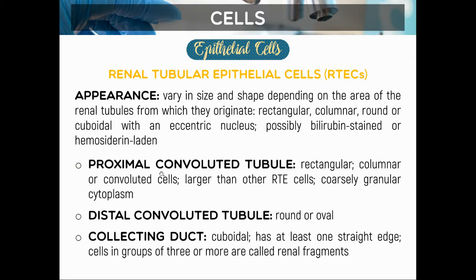For the proximal convoluted tubule, RTE cells are rectangular, columnar, or convoluted in shape — they are larger than other RTE cells and have a coarsely granular cytoplasm. It is important to note that while the largest epithelial cells are the transitional epithelial cells, the most significant epithelial cells in urine are the RTEs. For the distal convoluted tubule, RTEs appear round or oval. In the collecting duct, they are cuboidal with at least one flat edge, and when three or more appear together they are called renal fragments.